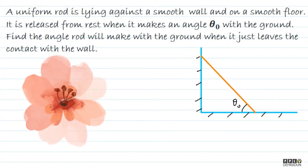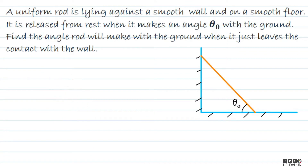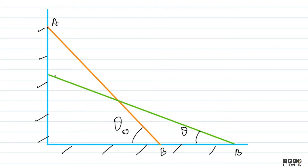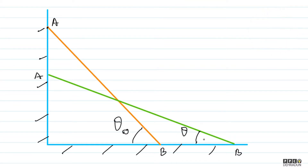Welcome students, let's look at this problem. A uniform rod is lying against a smooth wall and on a smooth floor. It is released from rest when it makes an angle θ₀ with the ground. Find the angle the rod will make with the ground when it just leaves contact with the wall. Let's say the rod is AB — point A slides down and point B slides to the right, with θ decreasing from θ₀.